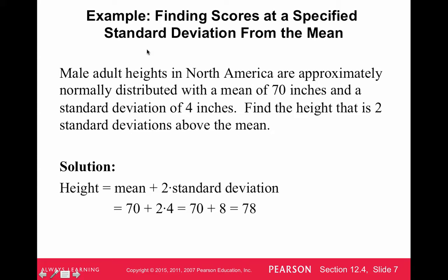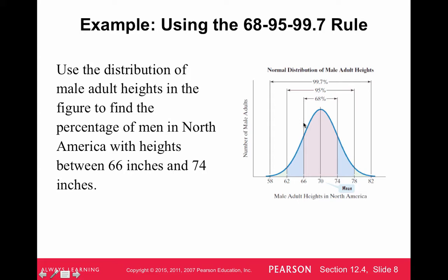For example, male adult heights in North America are approximately normally distributed with a mean of 70 inches and a standard deviation of 4 inches. Find the height that is two standard deviations above the mean. So 70 inches is the mean and the standard deviation is 4 inches. We want to go two standard deviations above the mean, so we do two times 4, which is 8, and add that to 70 — giving us 78 inches. The height that's three standard deviations above is 82 inches, and all these numbers are a certain number of standard deviations either below or above the mean.